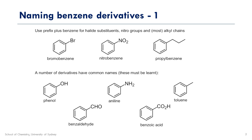A few derivatives have common names which need to be learnt, partly because they'll form the base name if more substitutions are added. Here are some examples: phenol, which otherwise would have been hydroxybenzene; aniline, which would have been aminobenzene; toluene, methylbenzene; and the last two, benzaldehyde and benzoic acid.